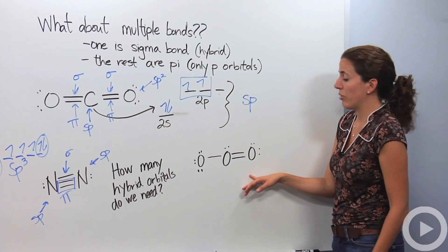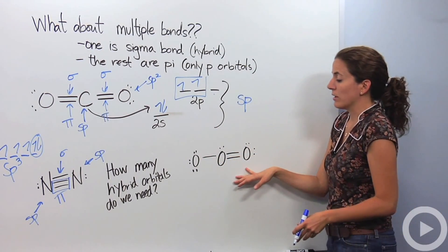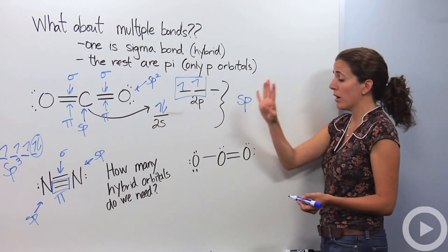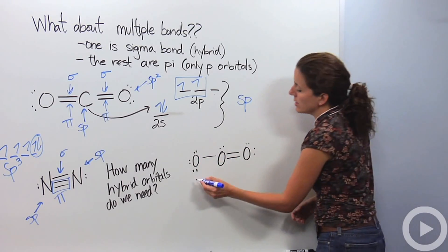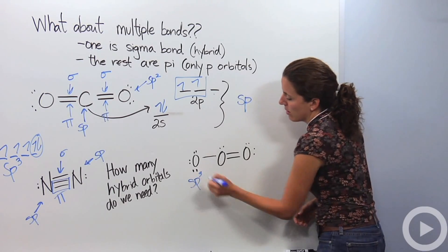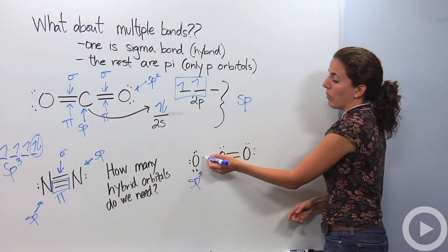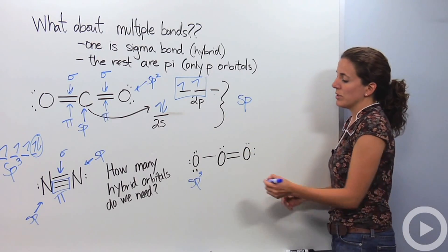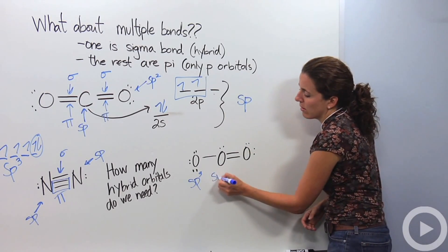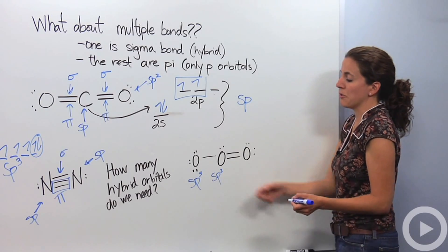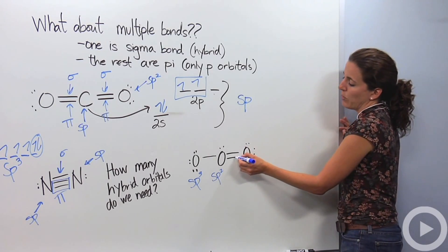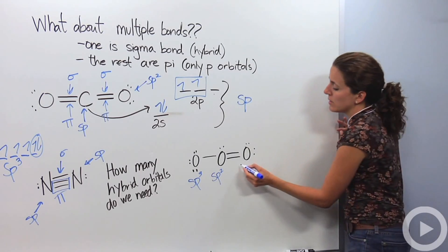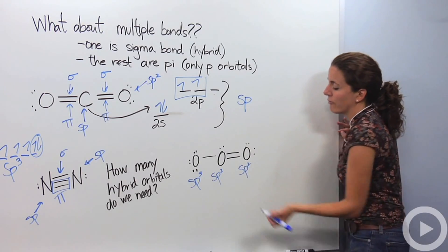If you look at ozone, O₃, all three oxygen atoms are a little different. The first oxygen has three lone pairs and one sigma bond — it needs four hybrid orbitals: one from s and three from p, so it's sp3. The middle oxygen has two sigma bonds and one lone pair — it needs three, so it's sp2. The third oxygen has one sigma bond and two lone pairs — again three hybridized orbitals, so it's also sp2.